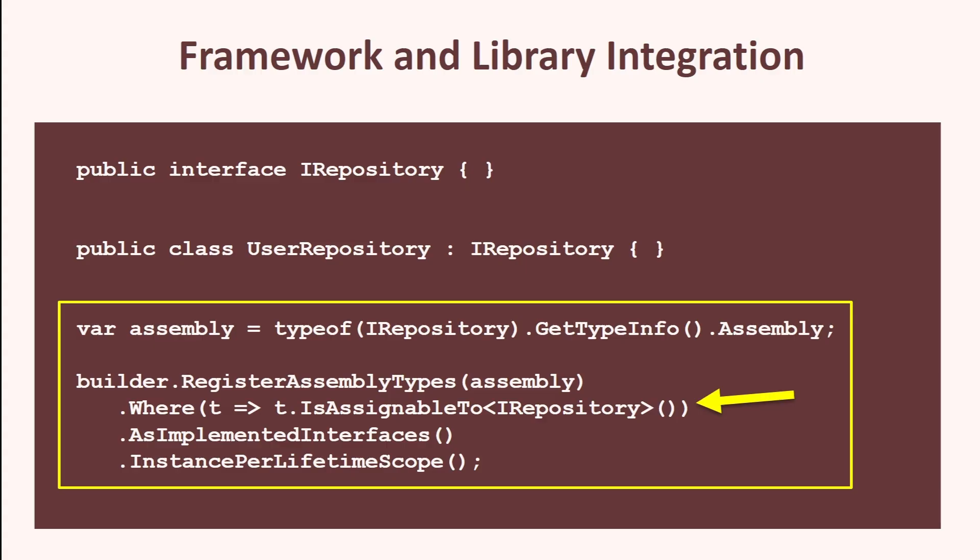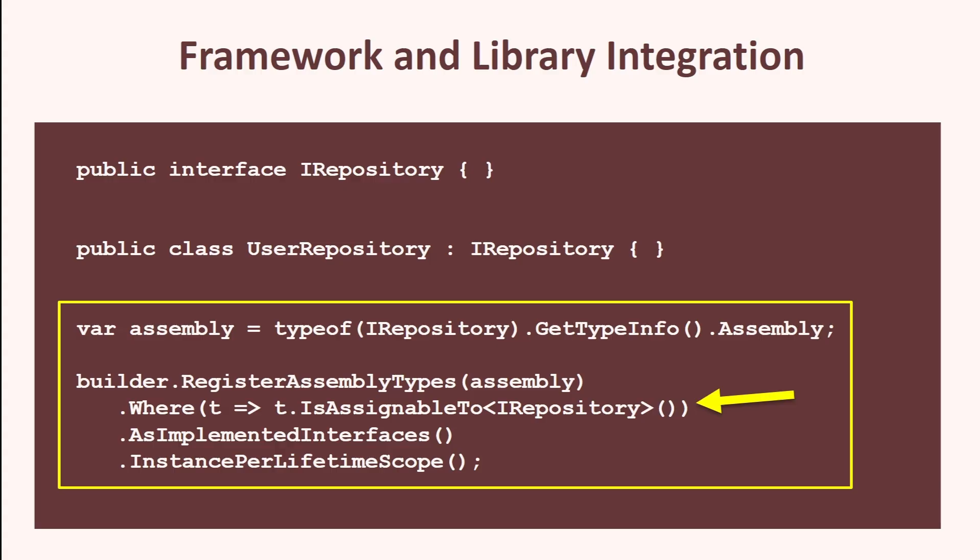Marker interfaces can also be used by frameworks or libraries to identify specific types for special processing, configuration, or registration. For instance, a marker interface IRepository implemented by many repositories can allow a dependency injection container such as Autofac to automatically register all the repositories of your project.